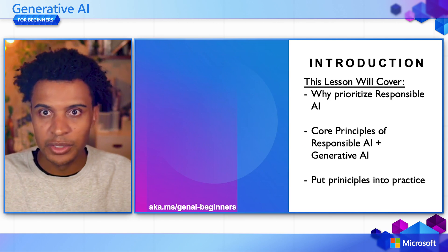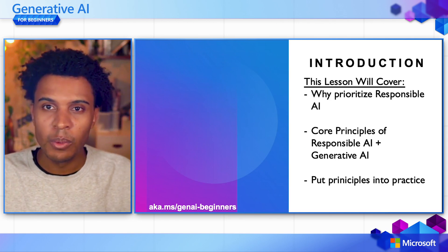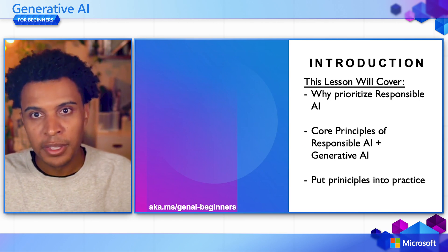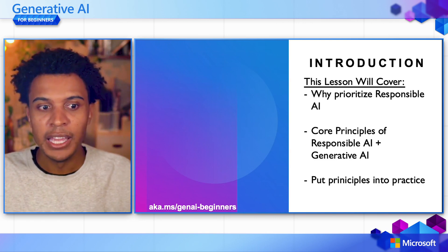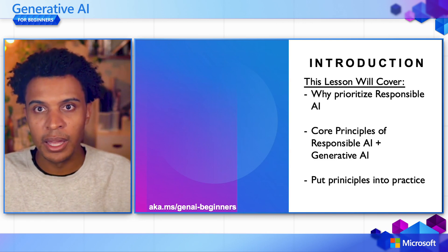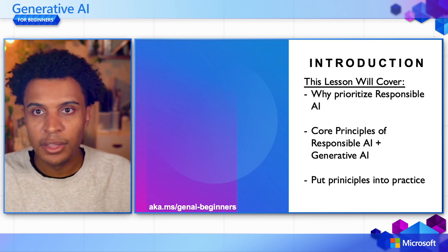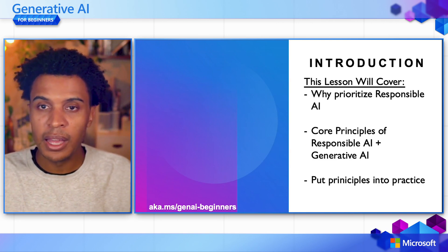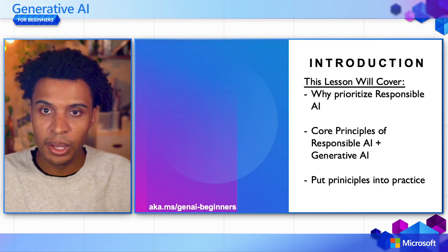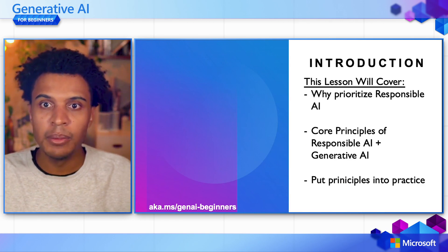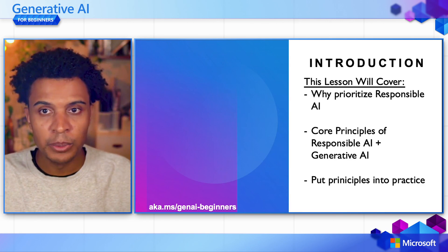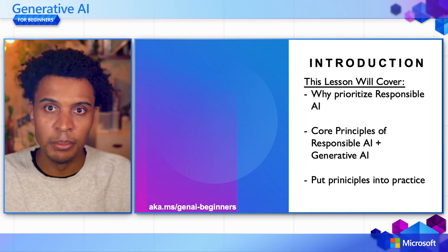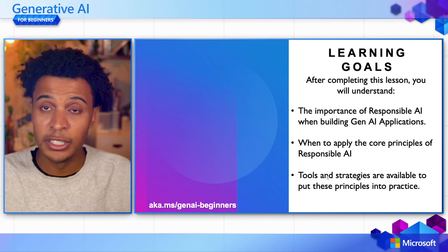As an introduction to this lesson, we're going to look at why we should really prioritize responsible AI. We put this lesson up early in this course because we want to make sure that everything we do is wrapped around responsible AI. Then we're going to look at the core principles of responsible AI and how they relate to generative AI in particular. And then lastly, we're going to put these principles into practice — it's great to have principles, but how they actually apply to building generative AI applications is important to talk about.